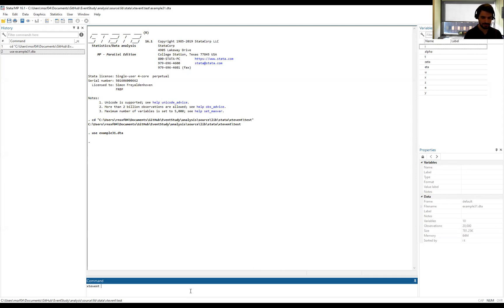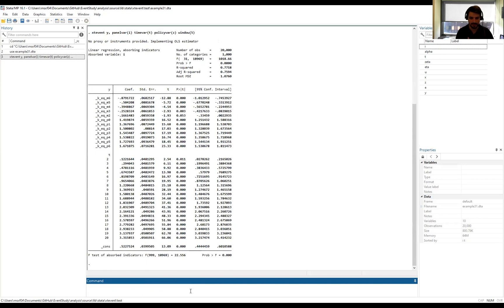We start by running our standard event study that depicts the event time path of the outcome. To do that, we type xtevent, declare panel variable and time variable, declare our policy variable which is denoted by z, and we declare the window length for estimation. That estimates our event study. To look at the corresponding event study plot, we run xtevent_plot, and we get this figure over here.